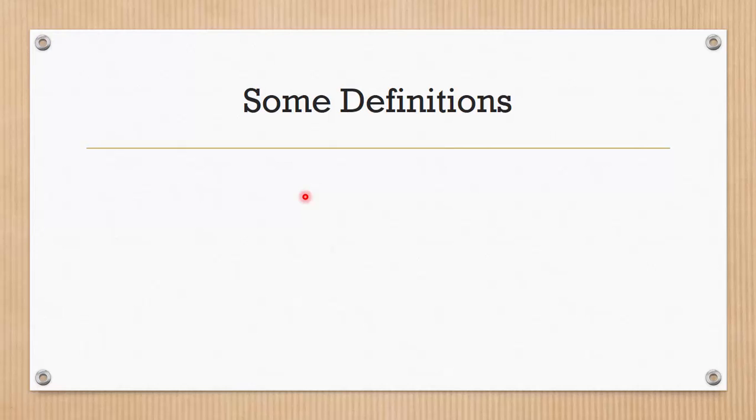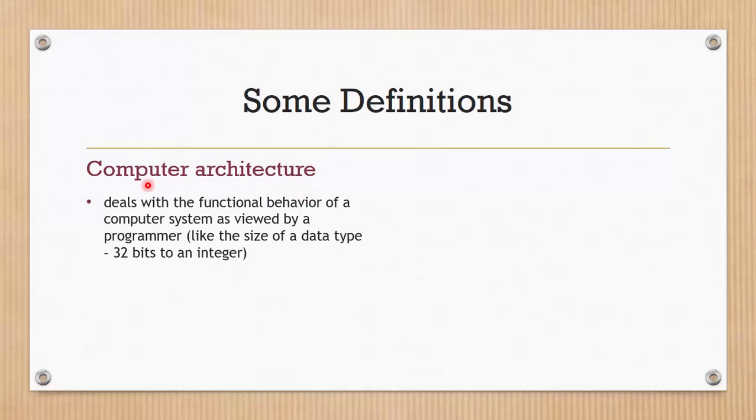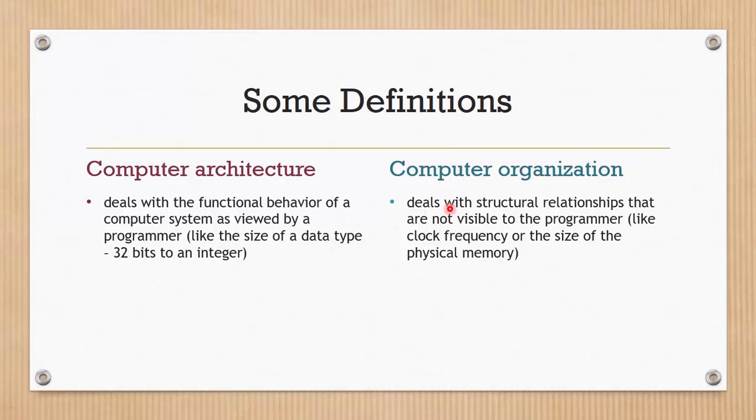Let us start with some definitions that relates to COA. The first thing is Computer Architecture. This relates to the behavior of a computer system as seen by a programmer like data type, the size of registers, the operation that we can perform, etc. On the other hand, computer organization deals with the structural relationship or the circuit which is not visible to the programmer. For example, the clock frequency, the size of physical memory, how many USB ports are there on the motherboard.